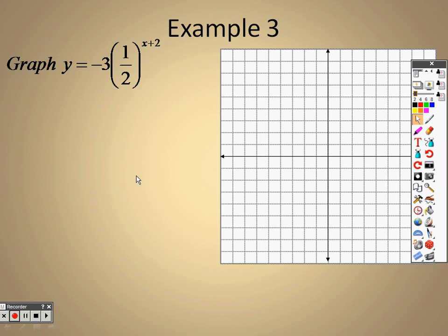So looking at example 3, we're in 8.2 on exponential decay functions. I want you to go to y equals again and clear that all out, and we'll go with negative, which is at the bottom of your calculator, 3, times parentheses 1 divided by 2, end parentheses.